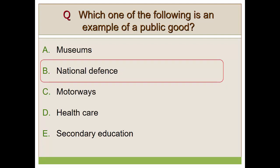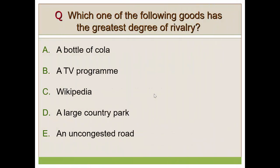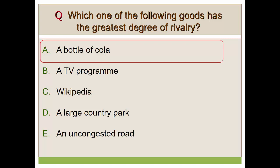National defense is the answer. You can't really call museums public goods because some museums charge admission. Motorways have tolls, healthcare has NHS and national insurance contributions, and secondary education can be privately provided. But national defense — once the budget is allocated, everyone within the border of the country gets the same service. Now, which of the following goods has the greatest degree of rivalry? It's a bottle of Coca-Cola.